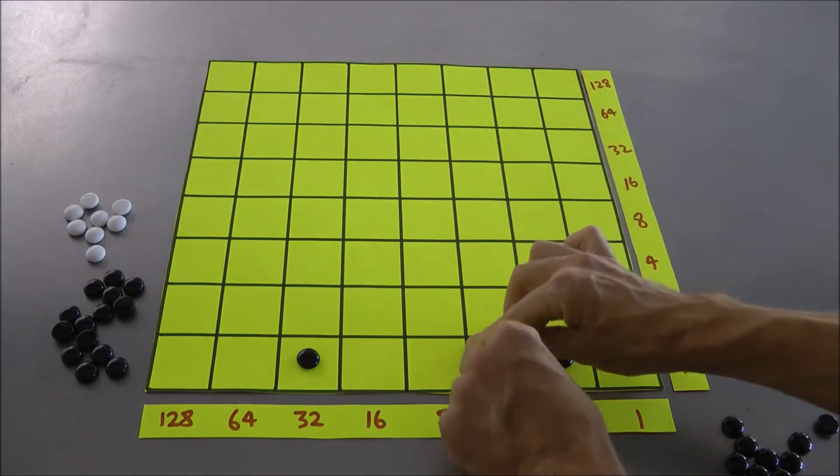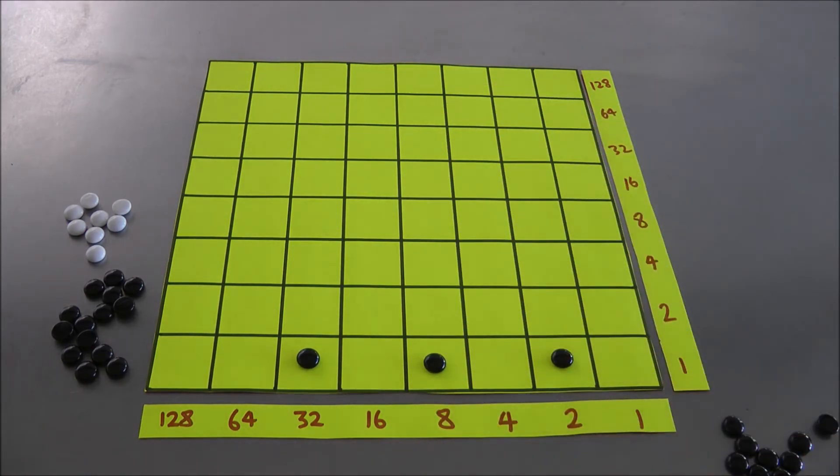Kaboom! Dot. Kapow! Dot. Ka-zing! Dot. Oh, is that 42? 10 and 32? 42. 6 times 7 is indeed 42. Fabulous.